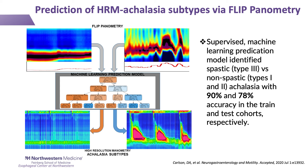While we'll skip some of the technical details, we applied a supervised machine learning approach, and via application of FLIP planometry parameters, we were able to differentiate spastic from non-spastic achalasia — HRM subtype distinctions that carry clinical management decisions — with 90 and 78 percent accuracy across training and testing patient cohorts.